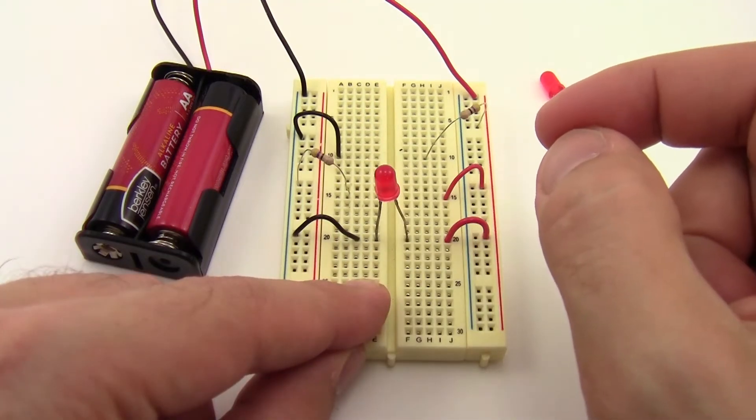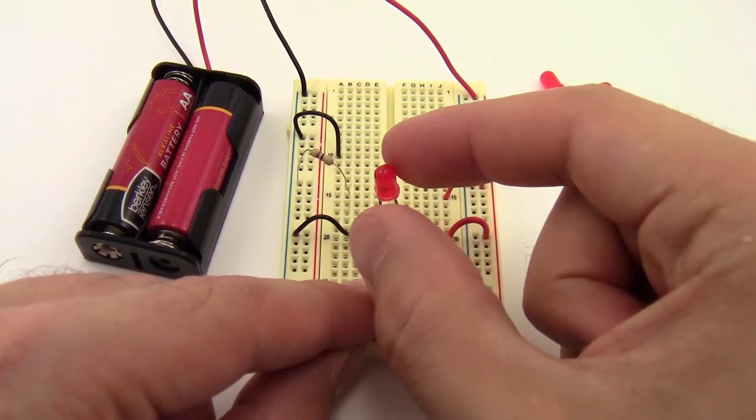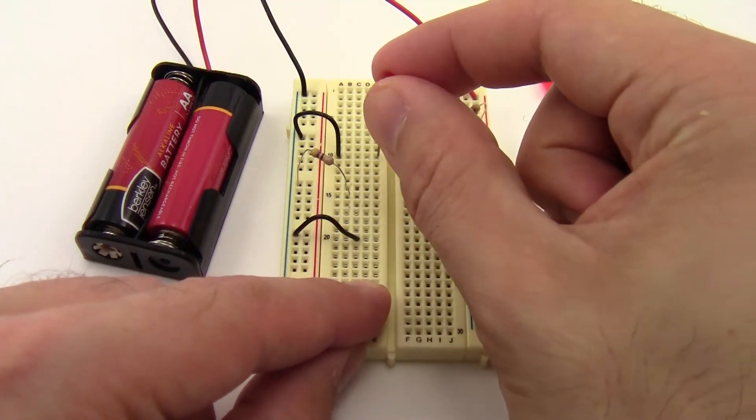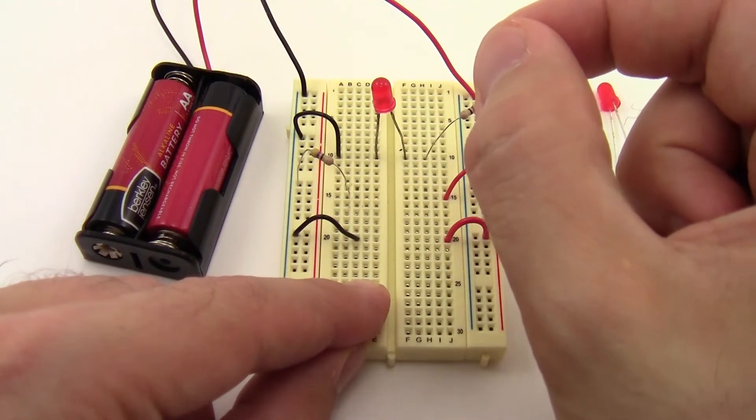So now if I take that LED out and put it in one of the other spots with a current limiting resistor, it's not going to light up because this LED is dead and it's actually a little hot to the touch now because we burned it out.